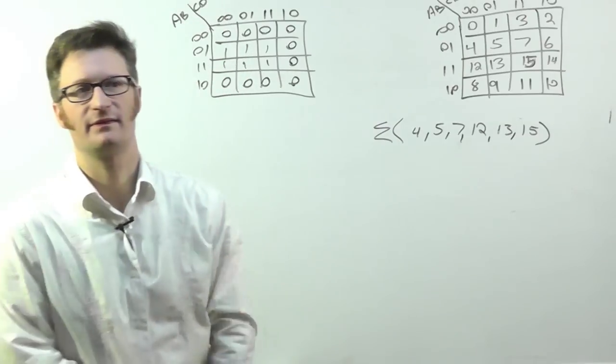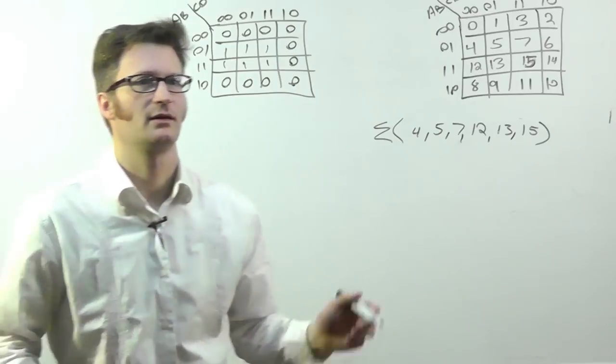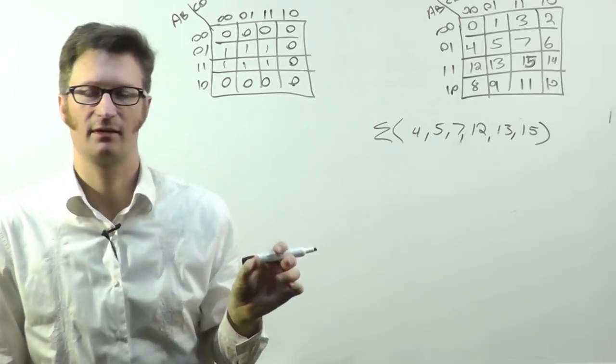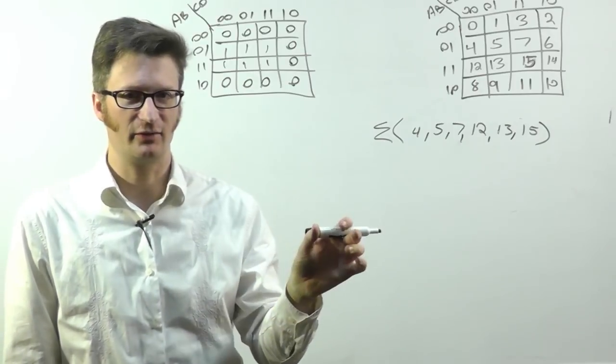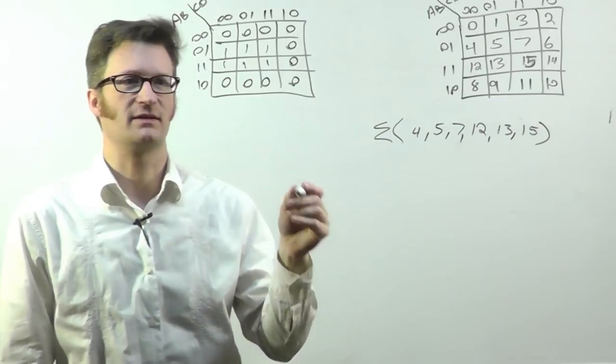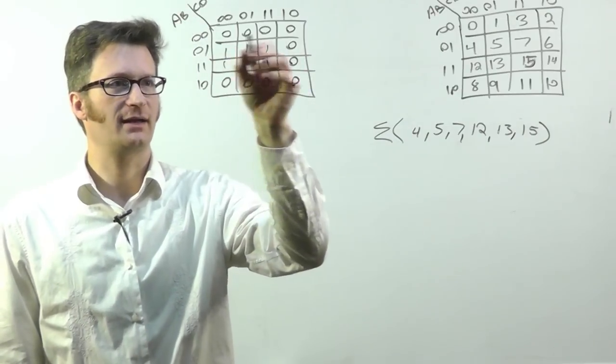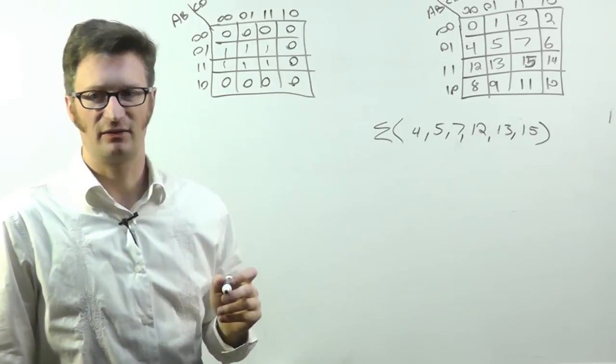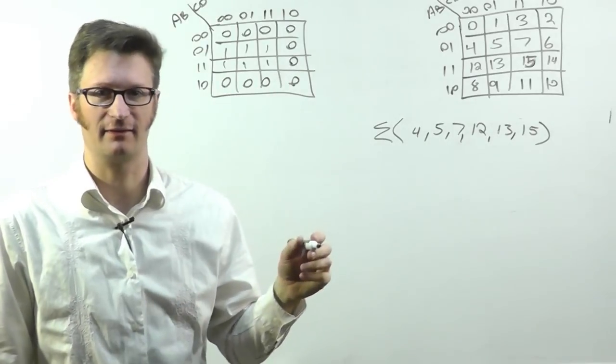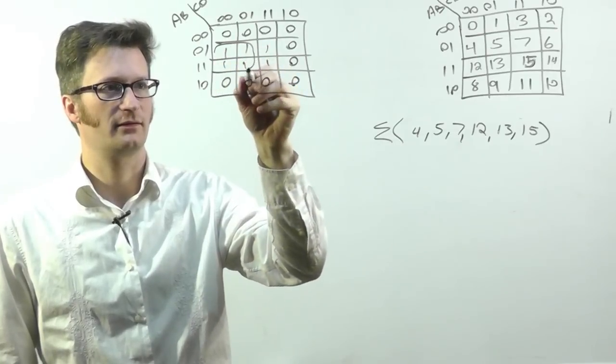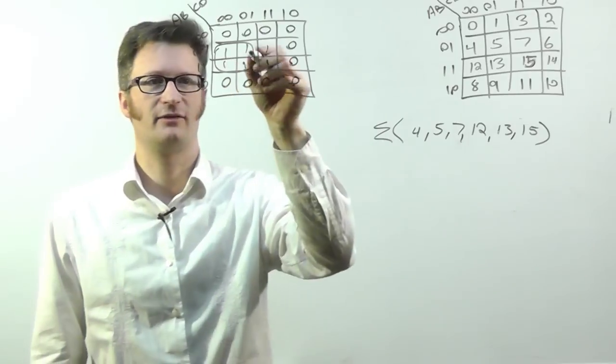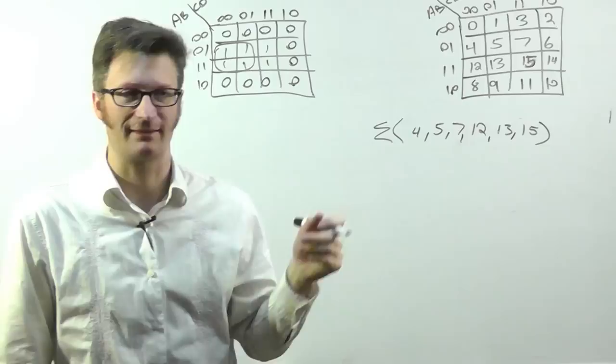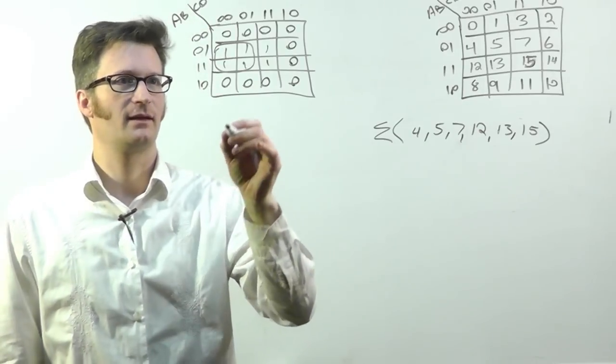Now the point of this is to find our minimized logic. And we have to find groupings of 1s in 2 to the n by 2 to the m dimensions. So I can't just grab all 6 of these 1s in one fell swoop because 3 is not 2 to the n where n is an integer.